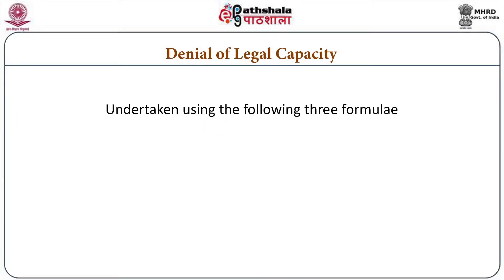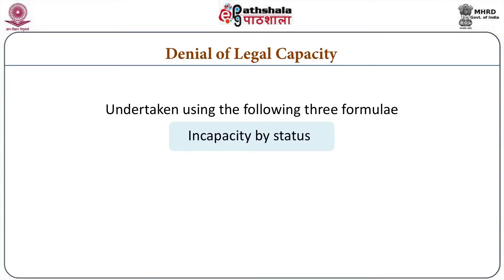The first denial of legal capacity occurs through incapacity by status — disabled people lose capacity simply because they are disabled, with no mediating test. I am granted legal capacity just because I am assumed to be normal. As a consequence, the person assumed not to be normal — having a disability — automatically loses legal capacity. This is the denial of legal capacity by status, and anyone reflecting upon it can see that it violates certain fundamental rights.